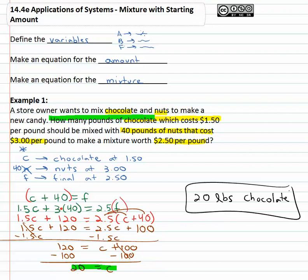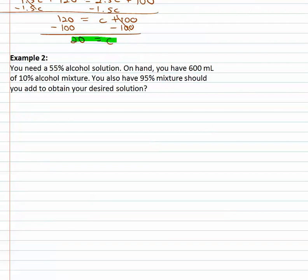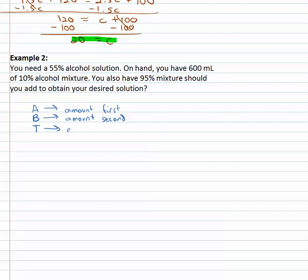Let's take a look at another example. Here we need a 55% alcohol solution. On hand we have 600 milliliters of a 10% solution, and we also have a 95% solution we're going to add to it. We'll use A and B for the two solutions, and they combine to equal some total T. A is the amount of the first, B is the amount of the second, and T is the amount of the total. We'll use T rather than F for final to avoid confusion with 'first.'